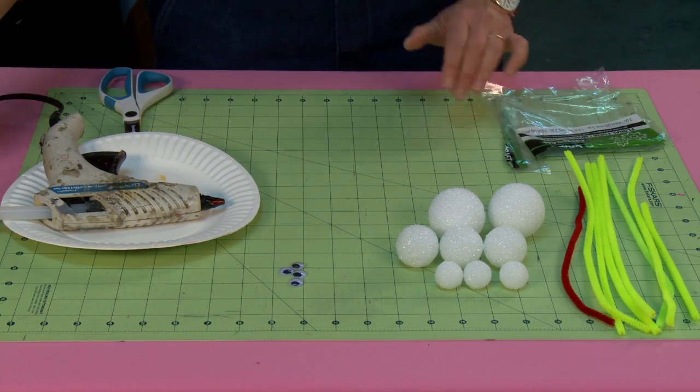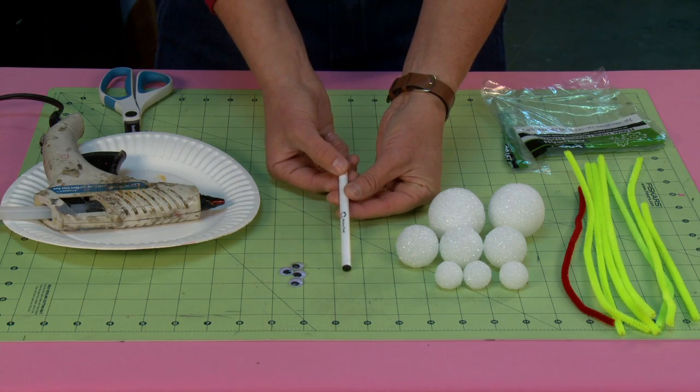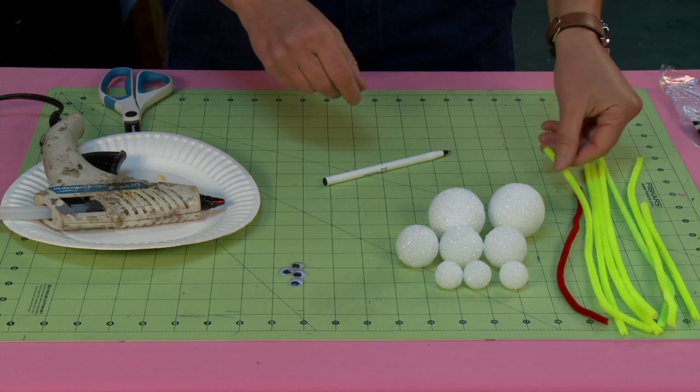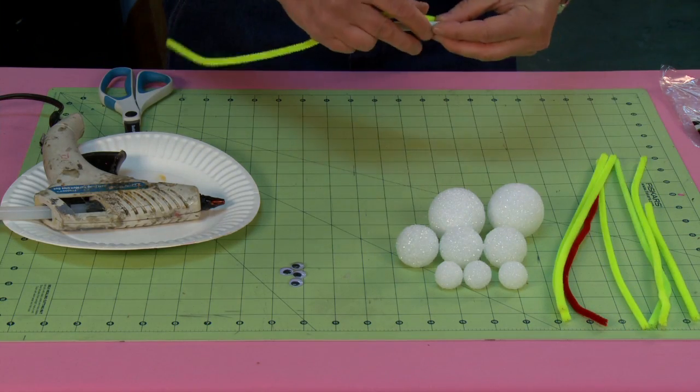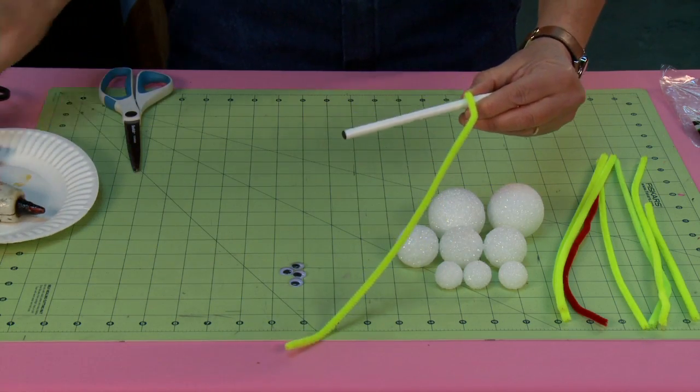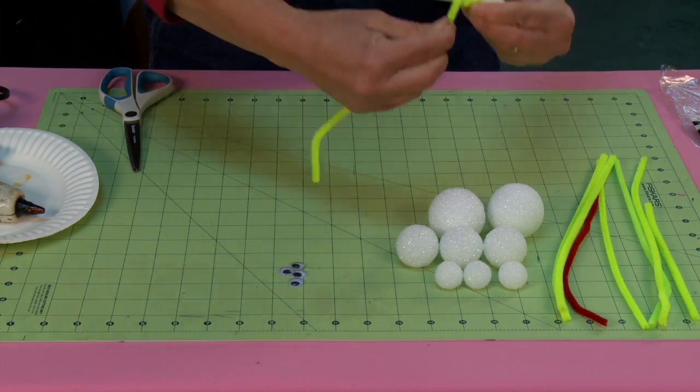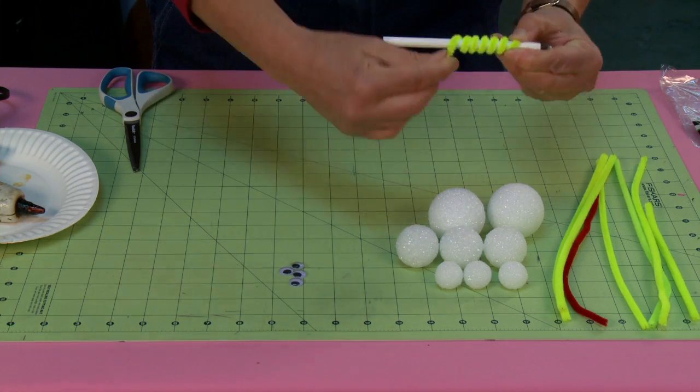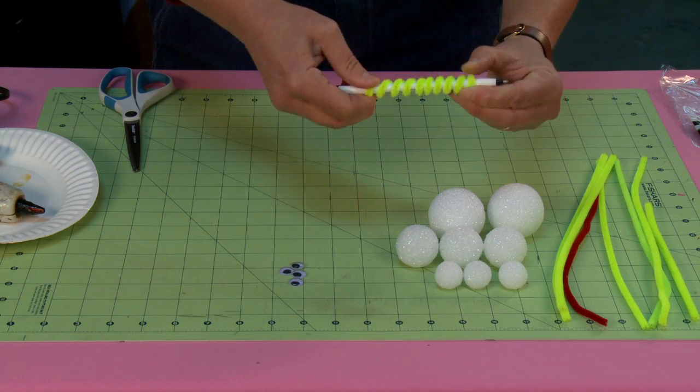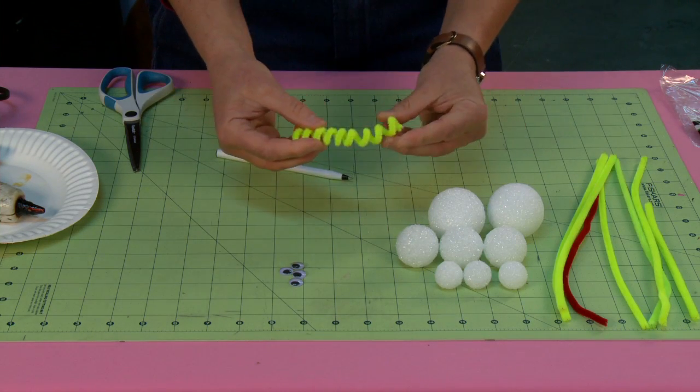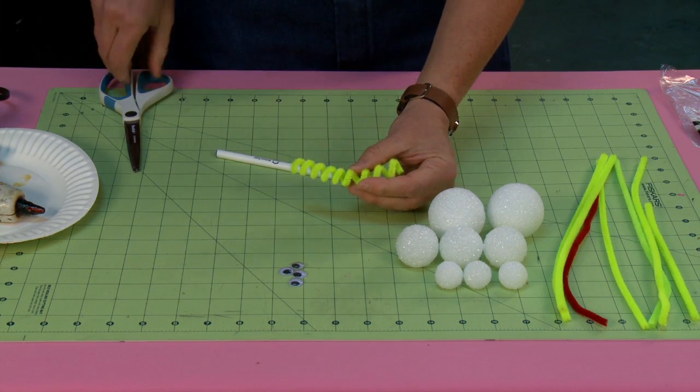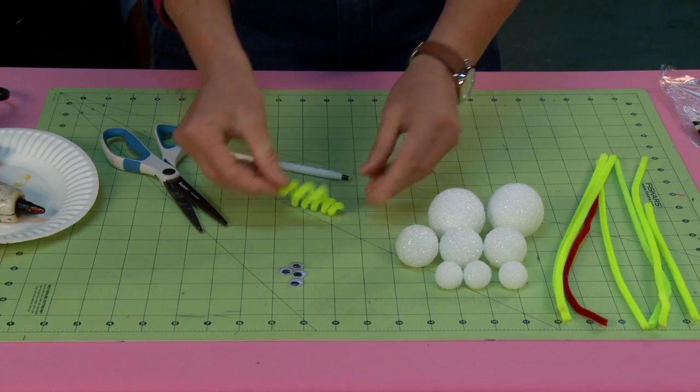The first thing I'm going to do is make springs because I want this to be springing and springy. I'm going to take my pipe cleaner and hold the end right there against the pen and start wrapping as tight as I possibly can. If you want looser springs you would use a bigger pen, but in this case I'm going to make some pretty tight springs. Out of each one of these pipe cleaners which are 12 inches long, I'll be able to get two springs.